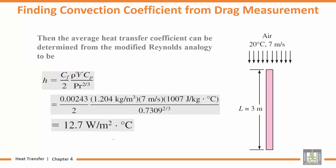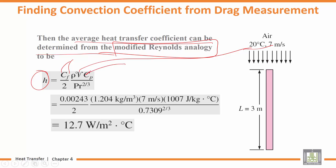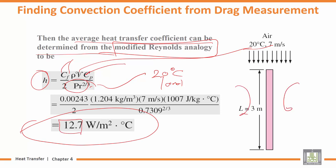Now we want to calculate the heat transfer coefficient H. It can be determined from the modified Reynolds analogy: H = (CF × rho × V × Cp) / 2. Everything here is known: CF is 0.00243, rho is known, V is 7 meters per second, and Cp was obtained from the table at 20 degrees and 1 atmosphere. Therefore, the heat transfer coefficient is 12.7 W/(m²·°C) on the two sides of this plate.